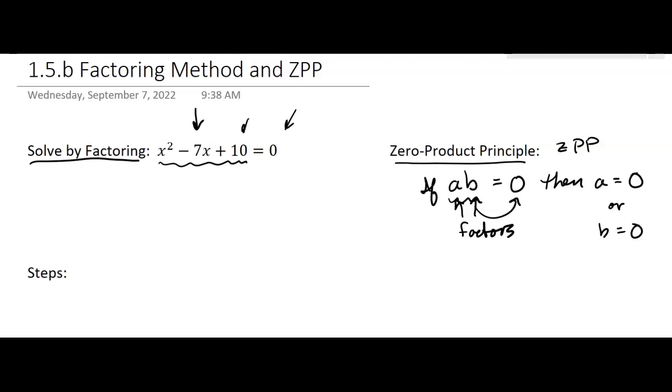But I need two numbers that multiply to be 10 and add to be negative 7. Those two numbers will multiply to be 10. Multiply to be 10, add to be negative 7. It's negative 2 and negative 5. That will work. That multiplies to be a positive 10 and adds to be a negative 7.